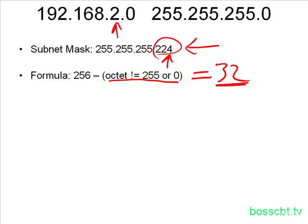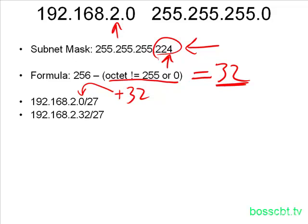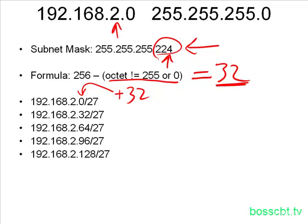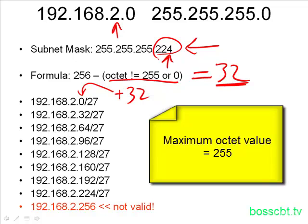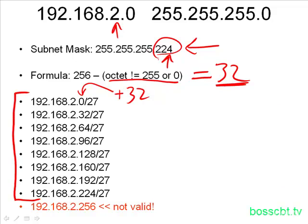At this point, all we have to do is keep adding up 32. We just start with the classful network itself. That's our first subnet. In order to get to the second subnet, all we do is add 32 to the fourth octet. We just keep repeating this process: 64, 96, 128, 160, 192, 224. And if we do it again, we get 256. We know we have to stop there because 256 is not a valid number. We know that the maximum value of an octet is 255. At that point, we're done, and these are all of our octets.